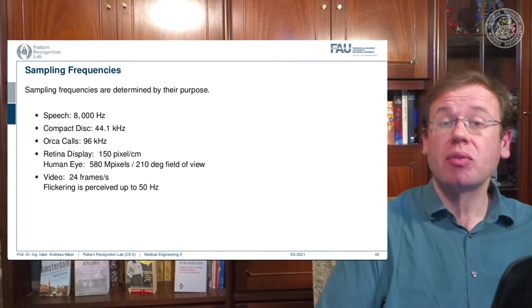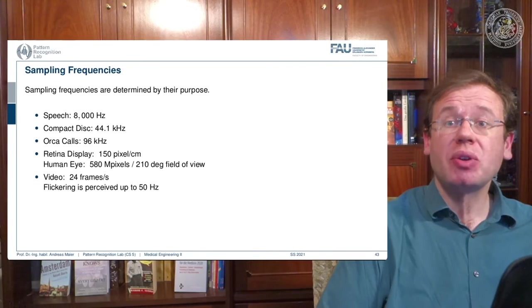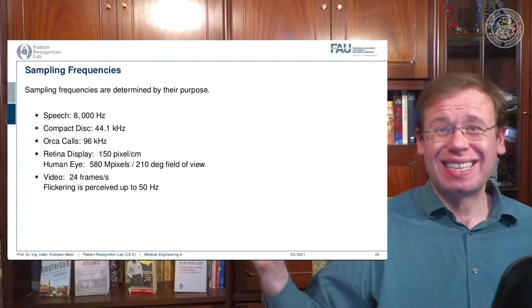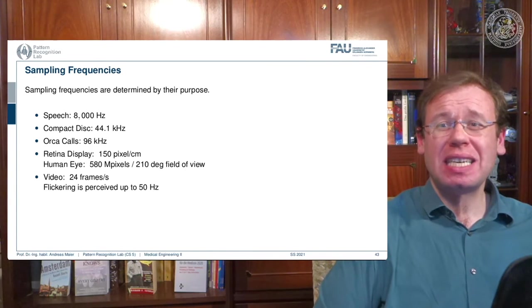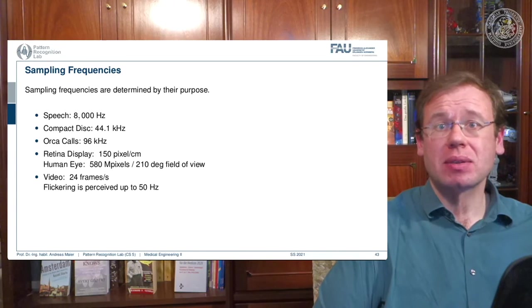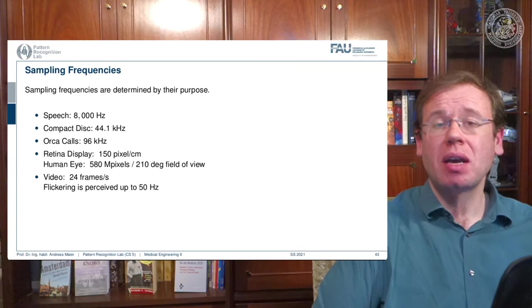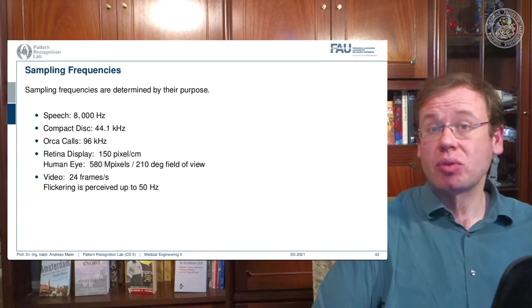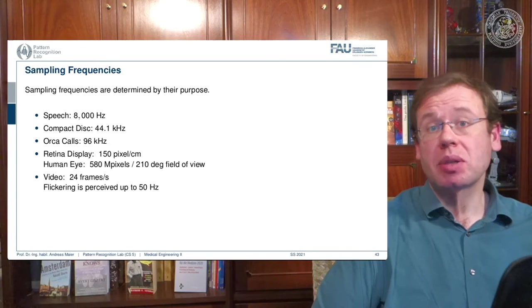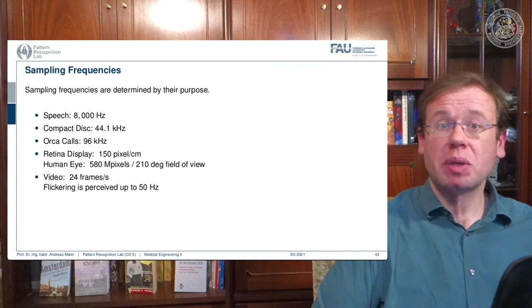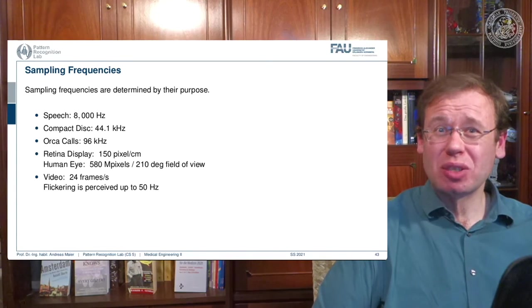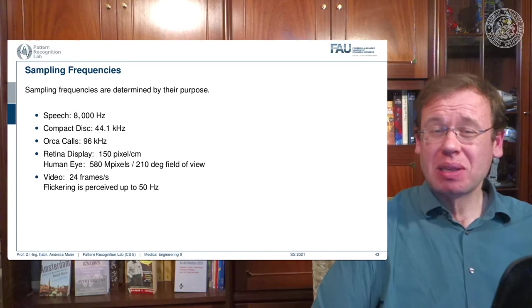So with the resolution of your eye. And if you would want to have the highest resolution on the retina for the entire field of view, then you would need a camera with 580 megapixels. So a 580 megapixel camera over a field of view of 210 degrees would be able to sample the entire visual system of the human.